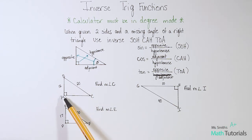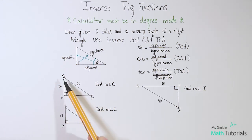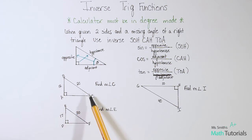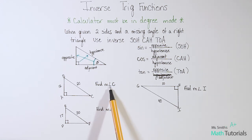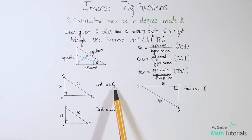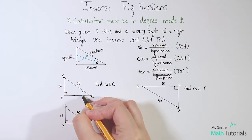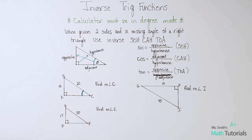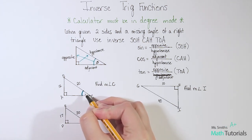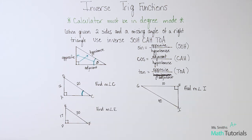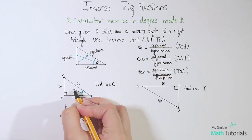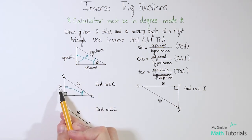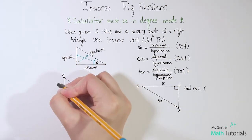Looking at our first example, we've got triangle ABC. Side AC is 12 and side BC is 20. They're asking me to find the measure of angle C — that's this angle right here. I'm standing at angle C, and looking straight across I see 12, so that's my opposite. The value 20 is opposite my 90-degree angle, so that's my hypotenuse. I'll label them OPP and HYP.